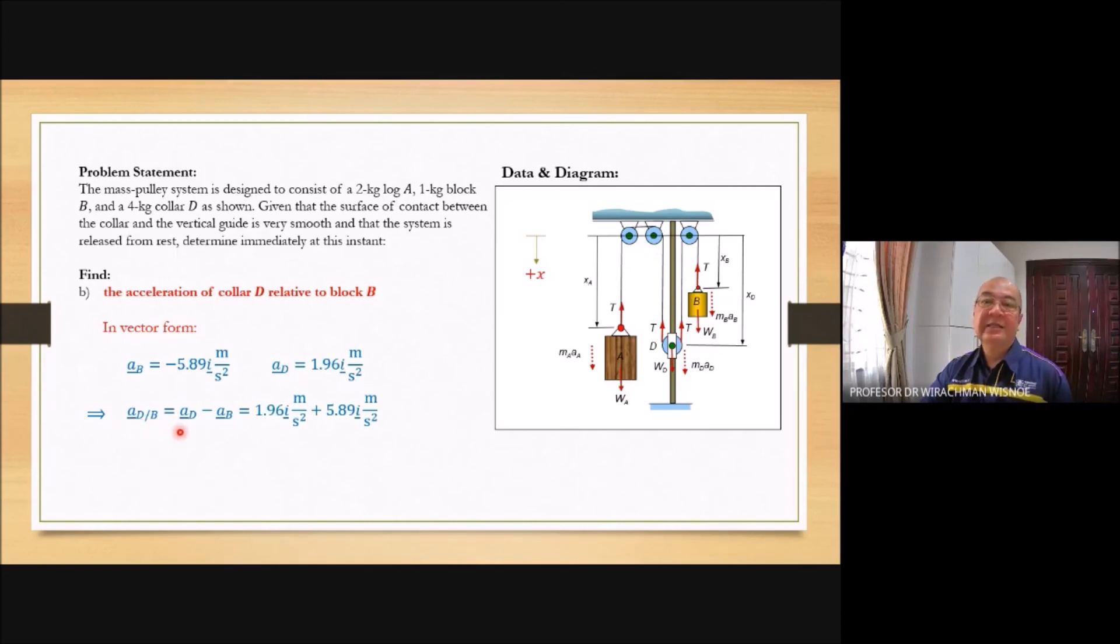The acceleration of D relative to B, it means acceleration of D minus acceleration B. This is the definition of relative in vector. So you just put this one minus this one. You have that is the acceleration relative to B. 7.85 I meter per second square.